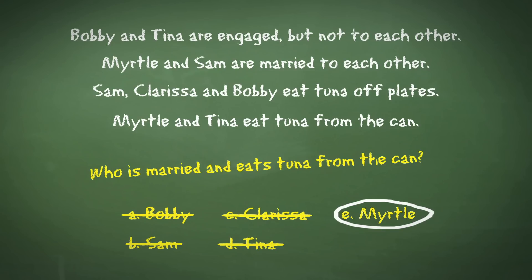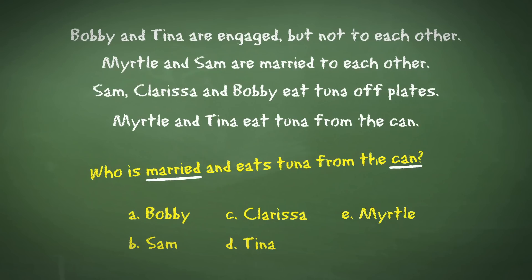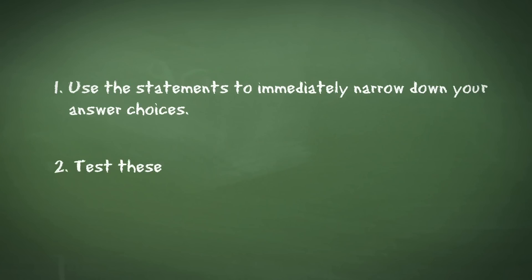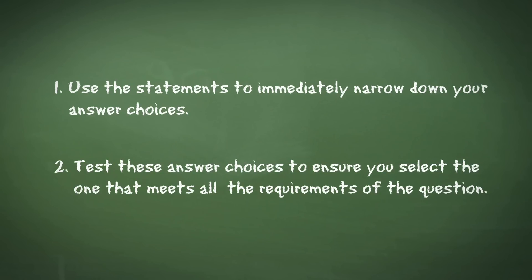Now there is often a slightly quicker way to do these questions rather than going through all the answer choices. If we look at the question, we have established that there are two parts to it — we are looking for someone who is firstly married and secondly eats tuna from the can. By looking at the statements we can immediately narrow down the answer. The statement that says Myrtle and Sam are married to each other means we can narrow down our answer choices to just two. We can then look at both of these and see which one matches the second part of the question, and therefore come to Myrtle much faster. So when tackling these questions, use the statements to immediately narrow down your answer choices, then test those choices to ensure you select the one that meets all the requirements of the question.